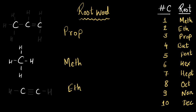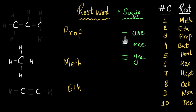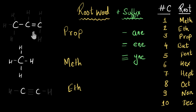Now let's talk about the suffix — a word added to the root word that denotes whether the molecule belongs to the alkane, alkene, or alkyne family. If there are only single bonds between carbon atoms, the molecule is an alkane and gets the suffix '-ane.' If there is even one double bond, the molecule belongs to the alkene family and gets the suffix '-ene.' And if there is even one triple bond, the suffix will be '-ine.' Looking at the first molecule, we see one double bond between two carbon atoms, so it belongs to the alkene family and gets the suffix '-ene.'